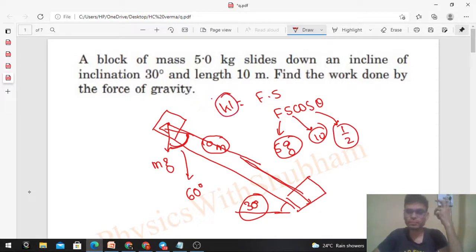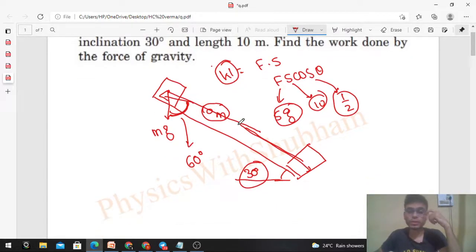And another method is the concept of conservative force, because mg is a conservative force. Gravity is a conservative force, and we have gravitational potential energy. So work done by mg will be equal to minus of change in gravitational potential energy - minus of change in gravitational potential energy, U final minus U initial.